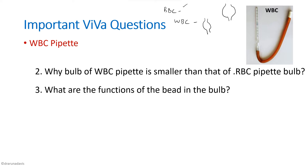What are the functions of the bead in the bulb? The bead mainly has three functions. One is for identification. Next, it is for proper mixing of the diluting fluid and the blood. Third is to know whether the pipette is absolutely dry or not. If the pipette is not dry, the bead will stick to its surface, whereas if it is completely dry, it will move around freely.